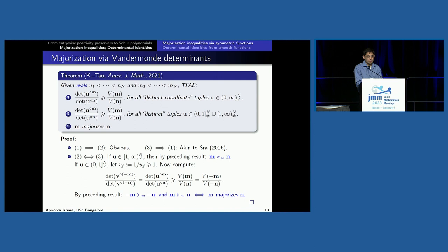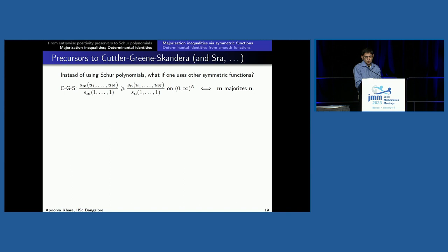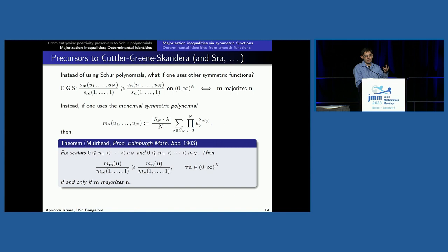That's one way to derive this extension to real tuples with a strengthened smaller domain using our result on weak majorization. These are all very closely related inequalities. What happens if you use other symmetric functions? If instead you use the monomial symmetric function, you get a hundred-year-old inequality — the Muirhead inequality — with the same conclusion: if and only if M majorizes N. A natural open question: what happens if one restricts the Muirhead inequality to the log-positive orthant?